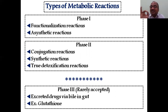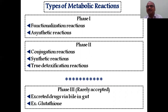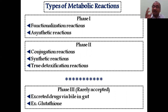Phase 2 is called conjugation reaction — also called synthetic reaction. This is the true detoxification because the toxicity of drugs is removed in Phase 2 reactions only. Phase 3 is very rarely accepted: drugs are excreted in bile (bilirubin or biliverdin, which is yellow in color). Bile is secreted in the gut/intestine — that's why fecal matter is yellow in color. Drugs excreted in bilirubin/biliverdin enter the fecal matter. An example of Phase 3 is glutathione.